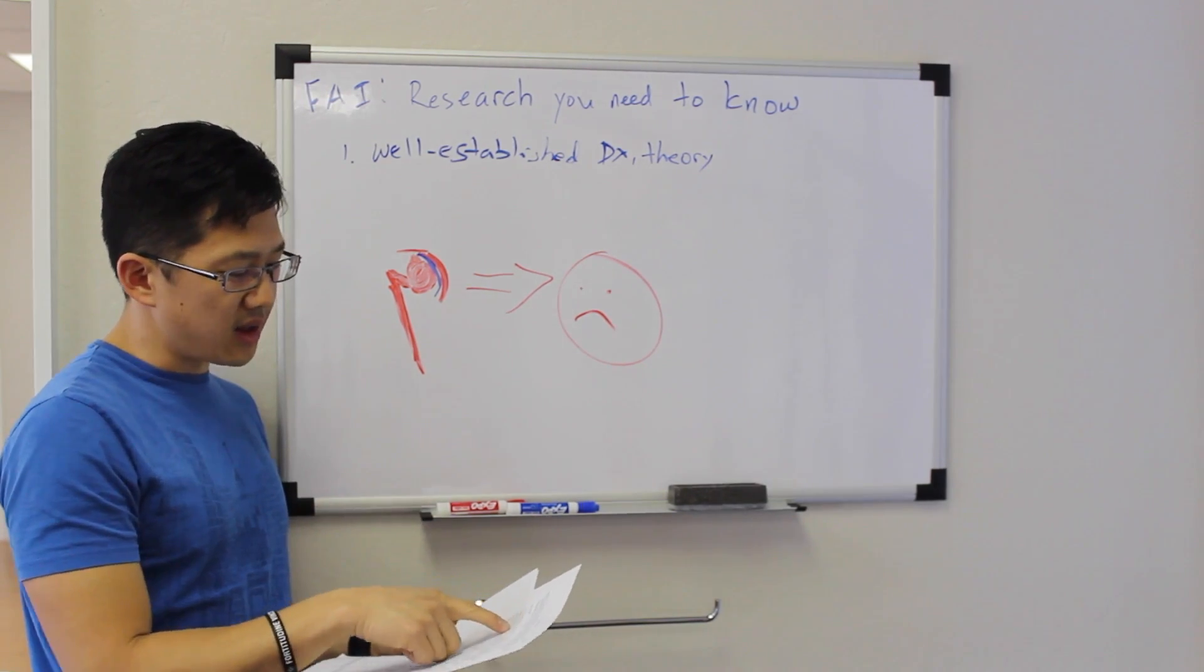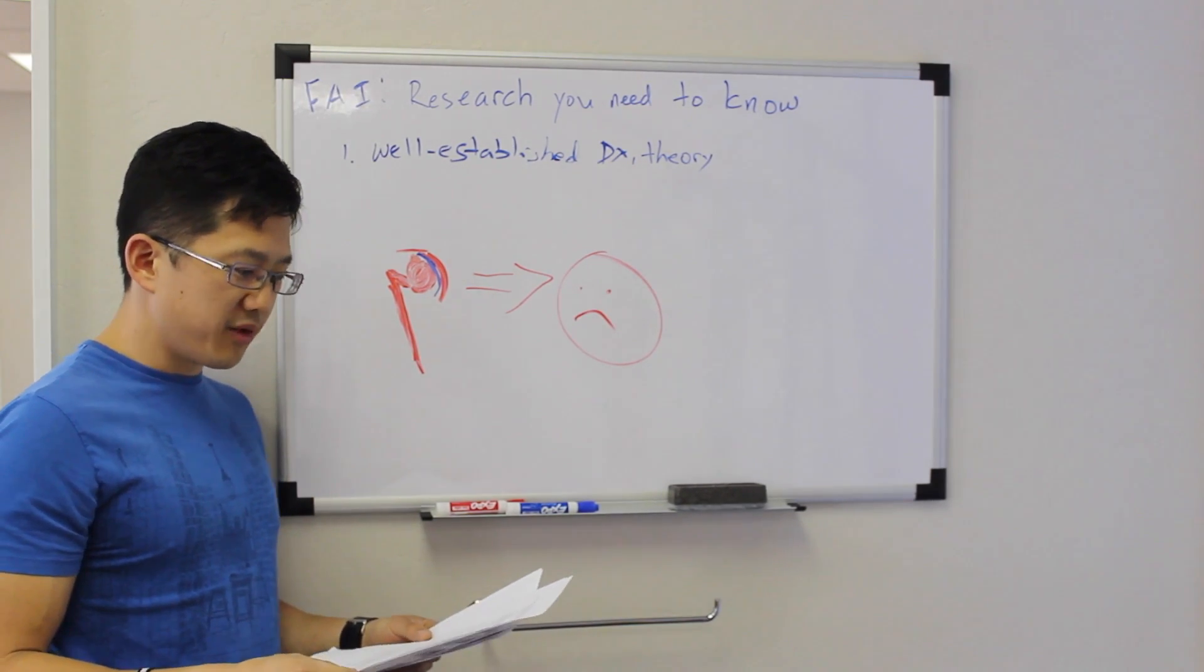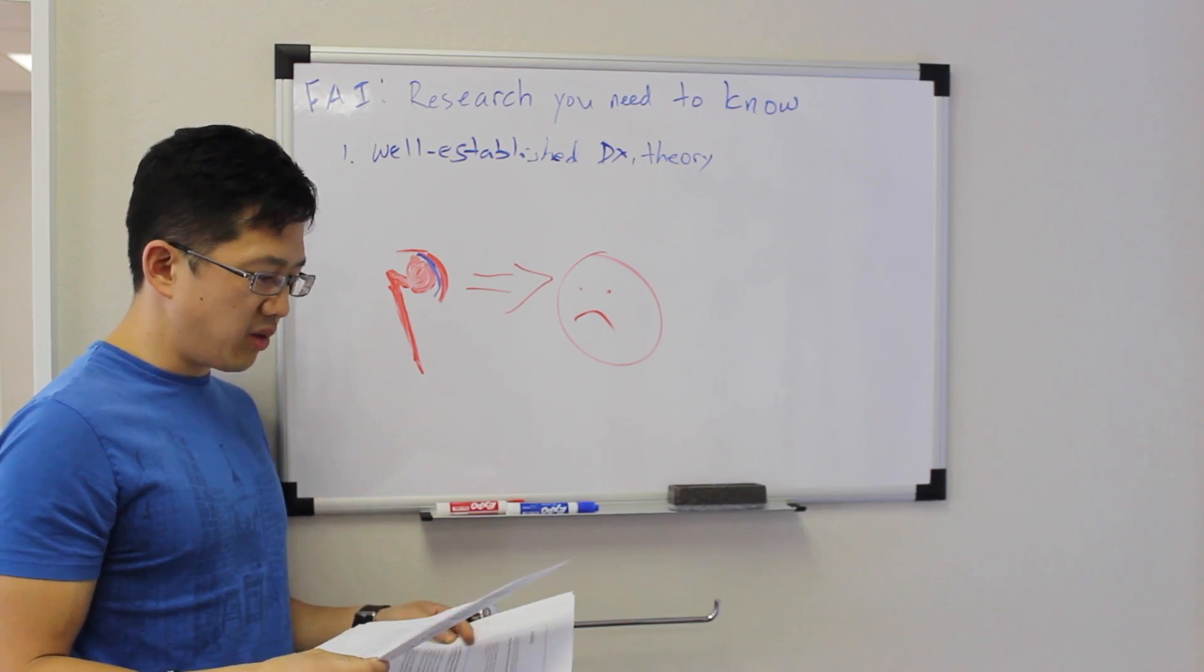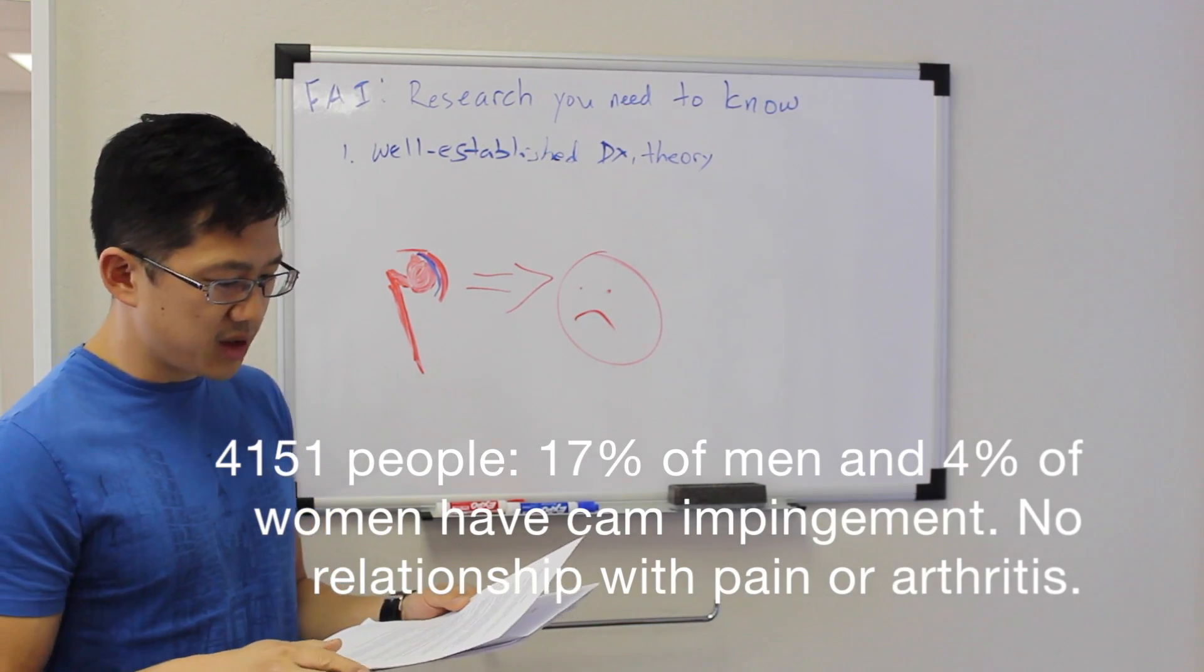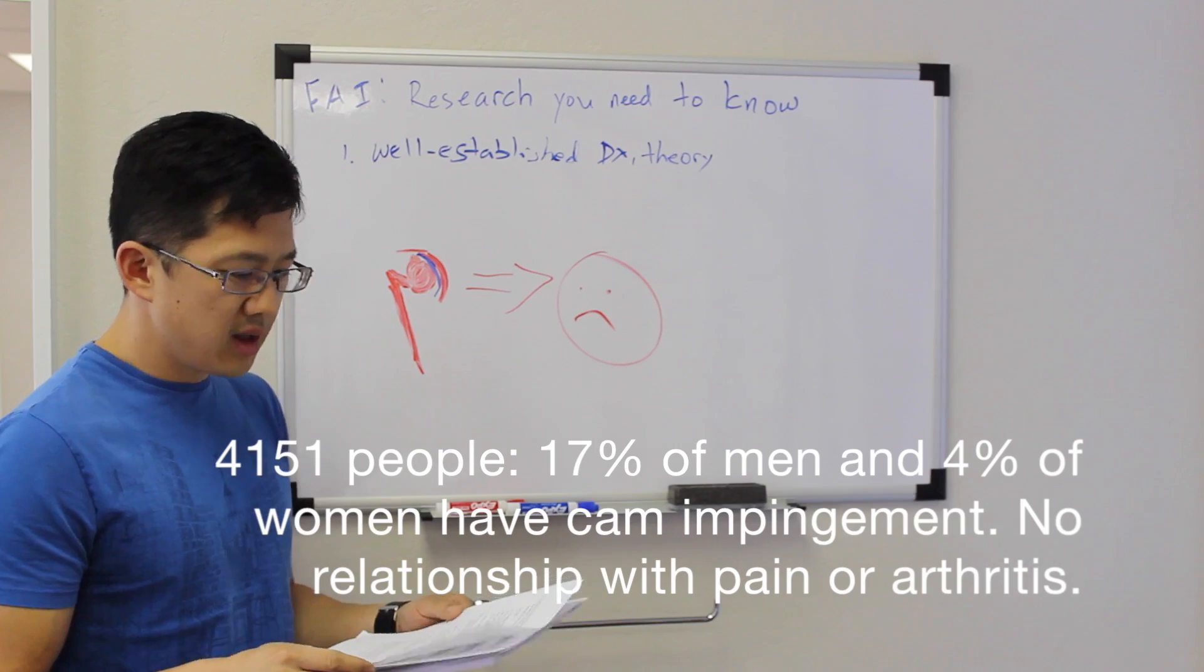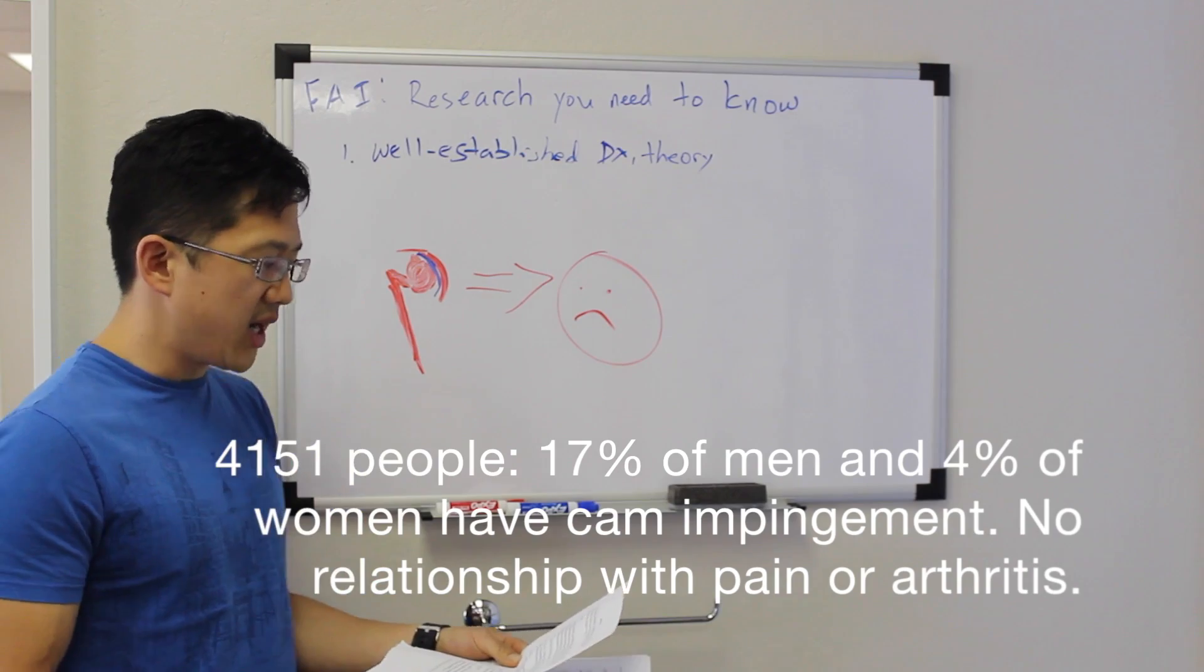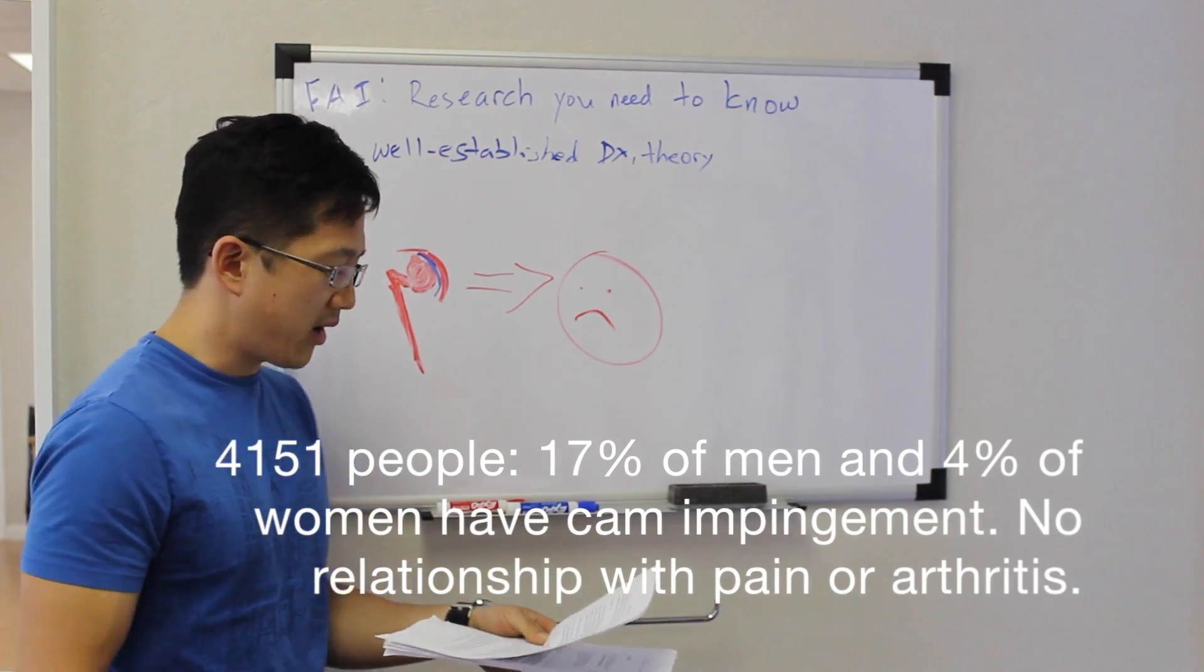And so in this study they said, key point was the overall prevalence of cam deformity was approximately 17% in men and 4% in women. The distribution of cam deformity was unaltered in subjects with normal joint space width or other features of hip joint degeneration, which basically means it really didn't matter if you seem to have hip joint degeneration or not. You may or may not have cam deformity, it didn't seem to matter.